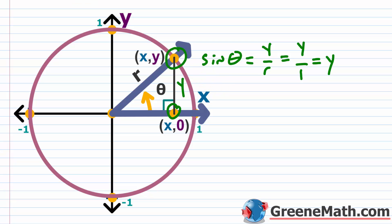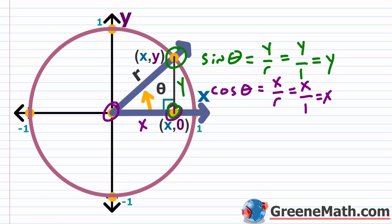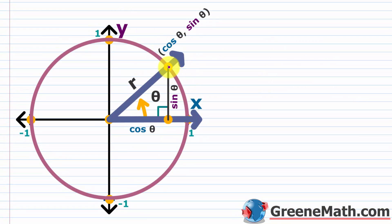The same thing happens for cosine of theta. Remember, cosine is x over r, or adjacent over hypotenuse. The horizontal distance from the origin to the point is x, so it's x over r, which is x over 1, which is x. The cosine of theta is just the x-coordinate of this point. So we can label this point as (cosine of theta, sine of theta).